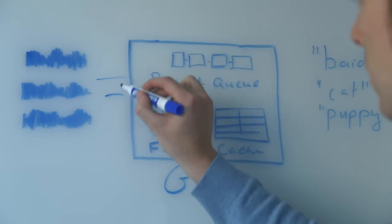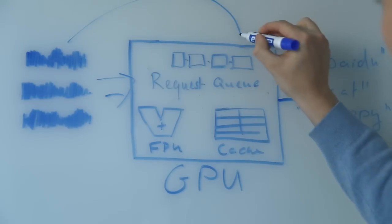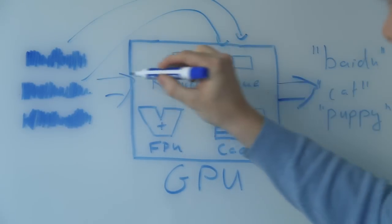Batching user requests together is difficult because of latency constraints. Users expect that when they speak to their phone, they get a response almost immediately. However, with a throughput-oriented processor like a GPU, you get better utilization by waiting and combining a lot of user requests.